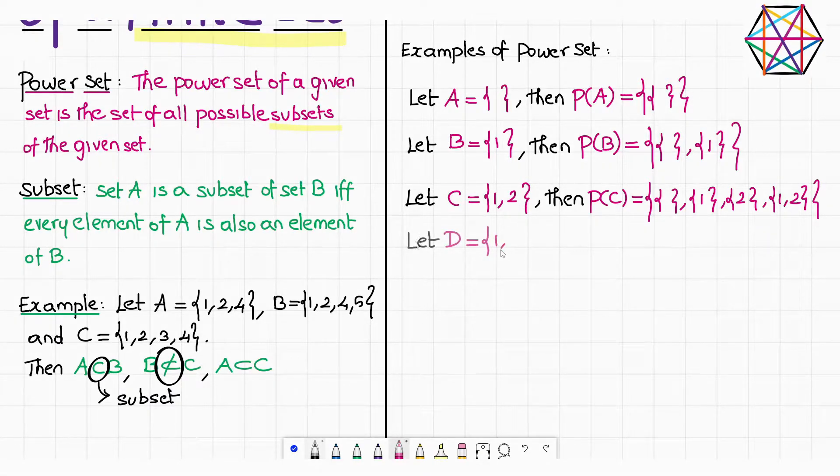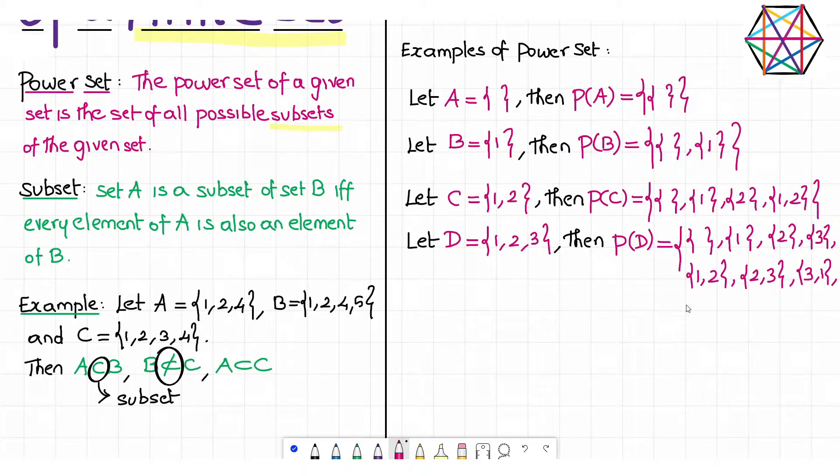Let D be the set with elements 1, 2, 3. Then the power set of D contains empty set, singleton 1, singleton 2, singleton 3, set {1, 2}, set {2, 3}, set {3, 1} and the entire set {1, 2, 3}.